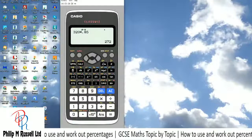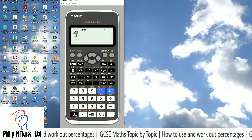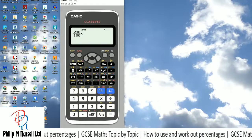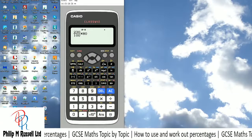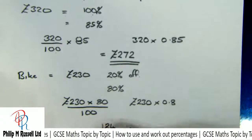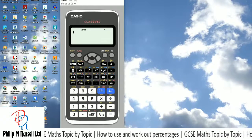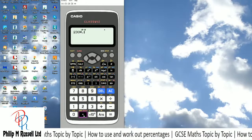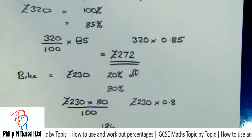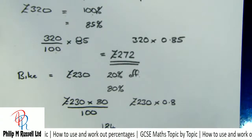Let's do it: 230 ÷ 100 × 80 gives the new price. Equivalently, 230 × 0.8 on the calculator gives exactly the same answer. That gives us £184. Percentage discounts are not really as bad as they seem.